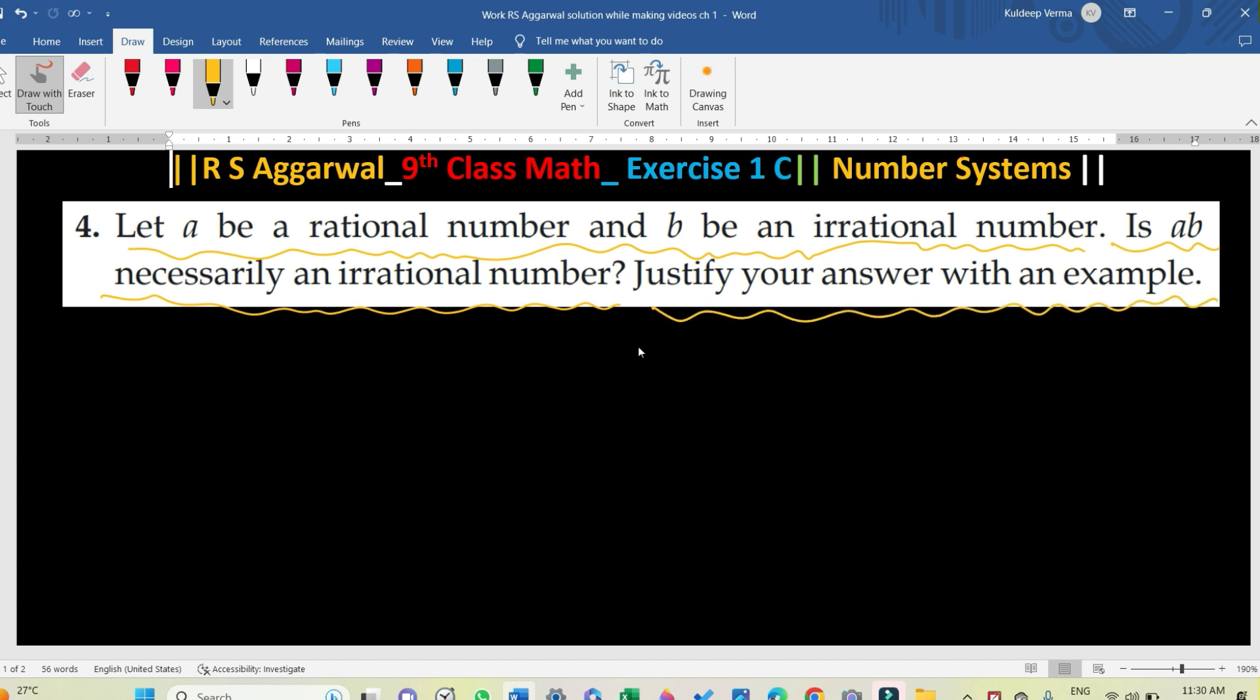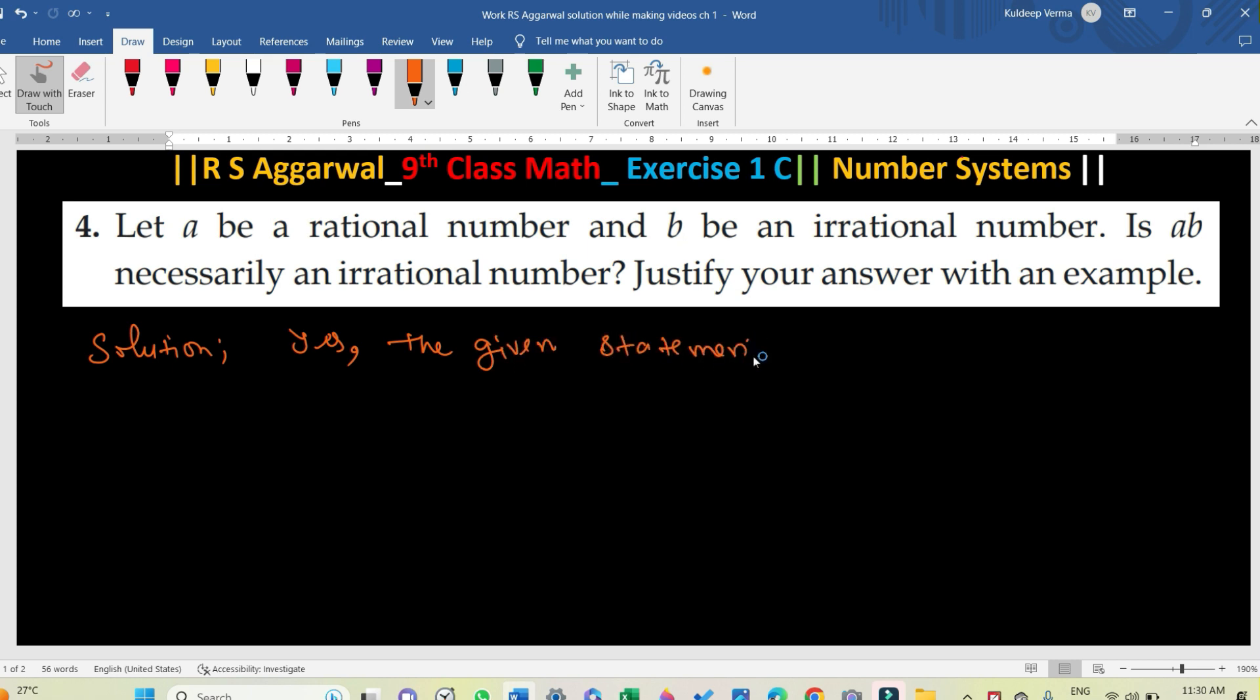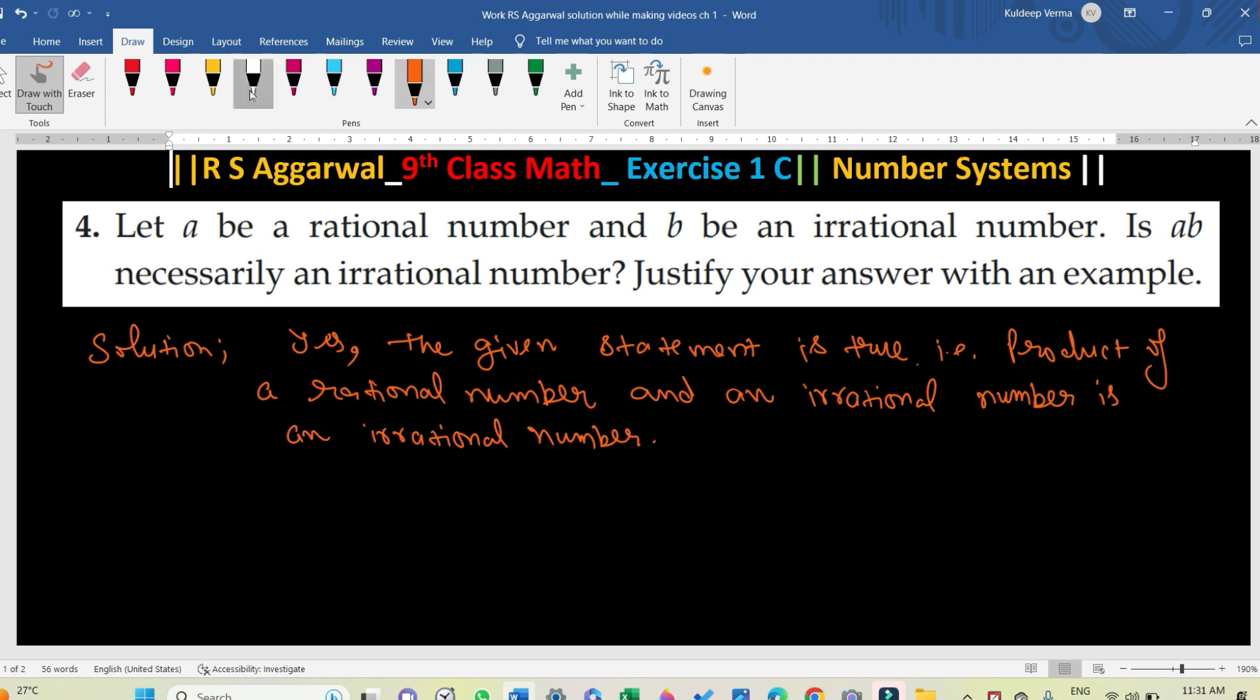So this is true. If we write a solution, yes, the given statement is true. That is, product of a rational number and an irrational number is an irrational number. Do you understand? If we multiply one rational number and one irrational number, then you will get one irrational number.